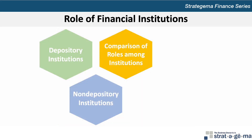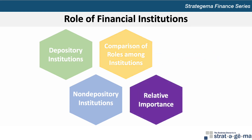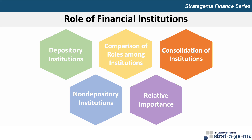In addition to filling the roles just described, financial institutions serve as monitors of publicly traded firms. Financial institutions are of vital importance to the economy, holding assets equal to approximately $135 trillion. In recent years, some financial institutions have merged in an effort to achieve economies of scale. By increasing the volume of services produced within a given infrastructure, the average cost of providing services such as loans can be reduced.